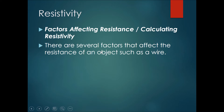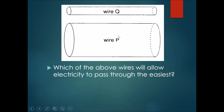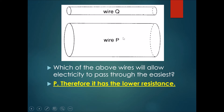Let's talk about resistivity. There are several factors that affect the resistance of an object such as a wire. The first one is the cross-sectional area of the wire — the area you would see if you cut the wire across. Is it faster to drink water through a thick bubble tea straw or a thin normal straw? The big straw allows you to drink much quicker, so a wire with a larger cross-sectional area will allow electricity to pass through more easily — it has the lower resistance.